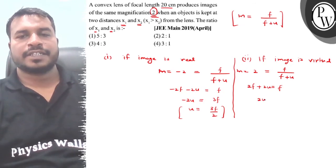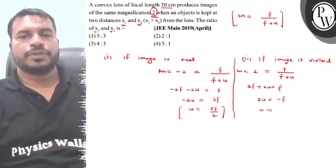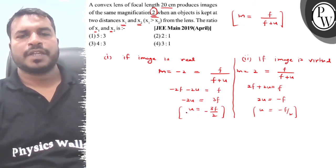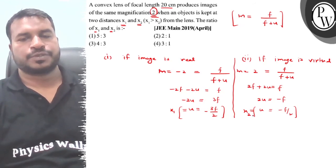So here we put 2u equal to minus f, and u equal to minus f by 2. So minus here, so this is x1, and this condition is x2.